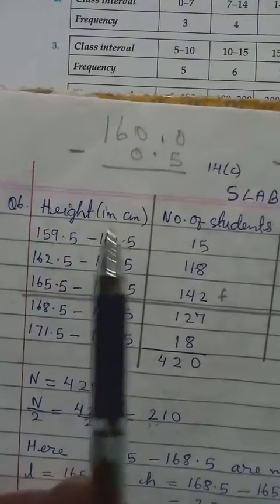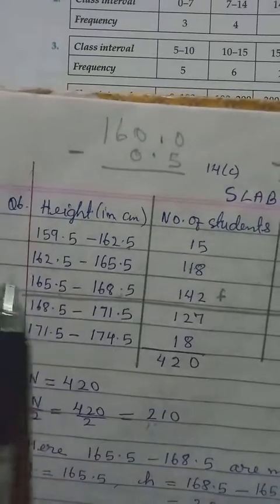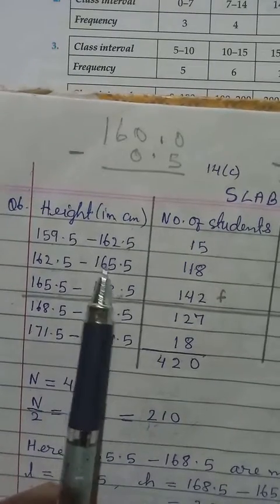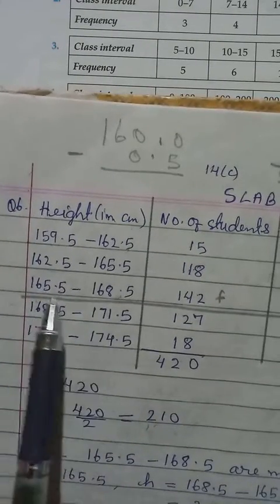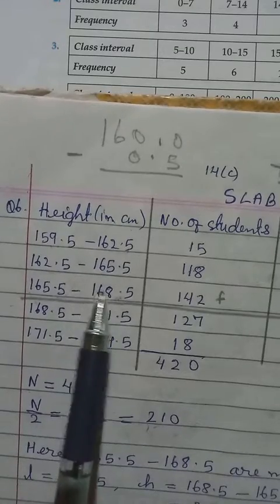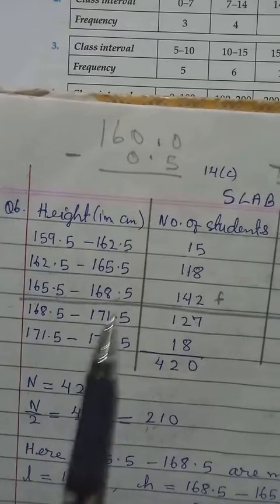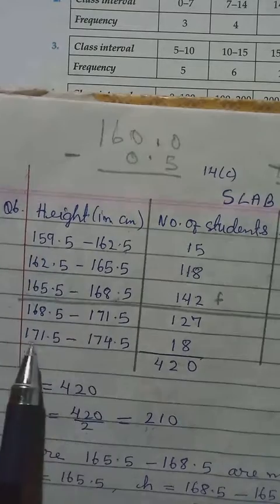So here you can see, if we get 162.5, there also will become 162. Here we get 165.5. This one we write here. Then this 168, we increase by 0.5. This one we write here. Then like that we continue.